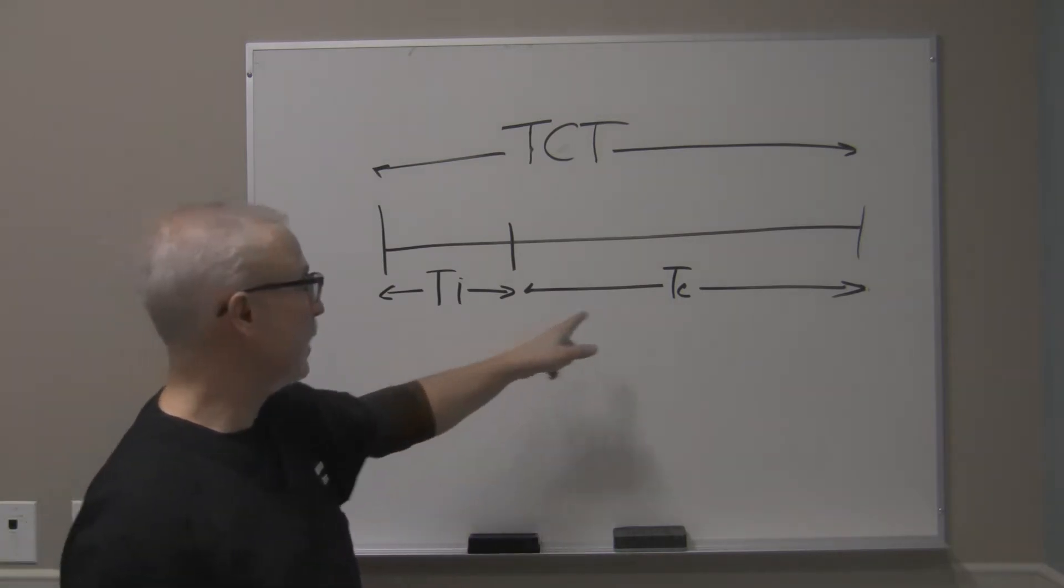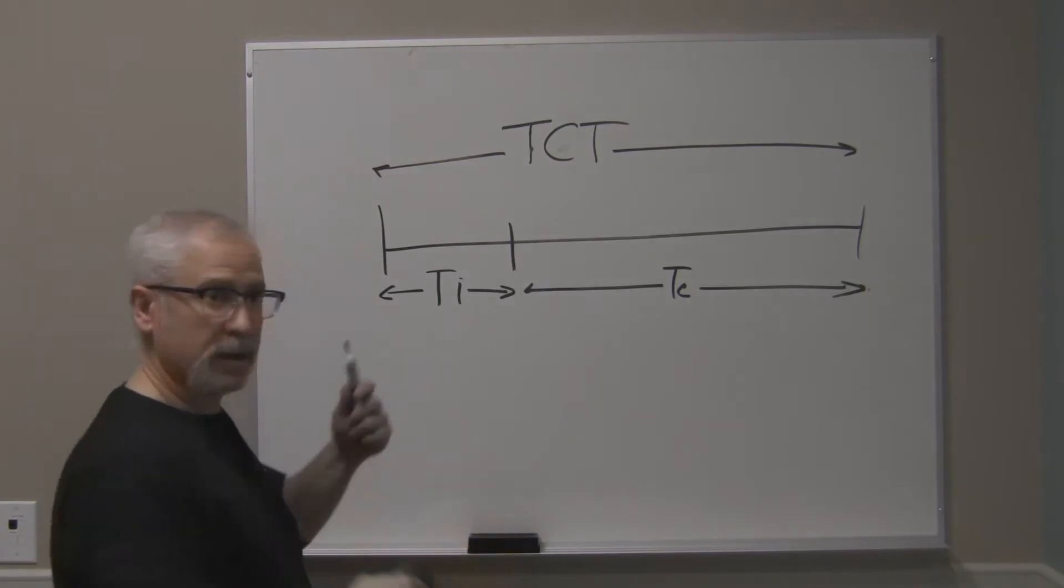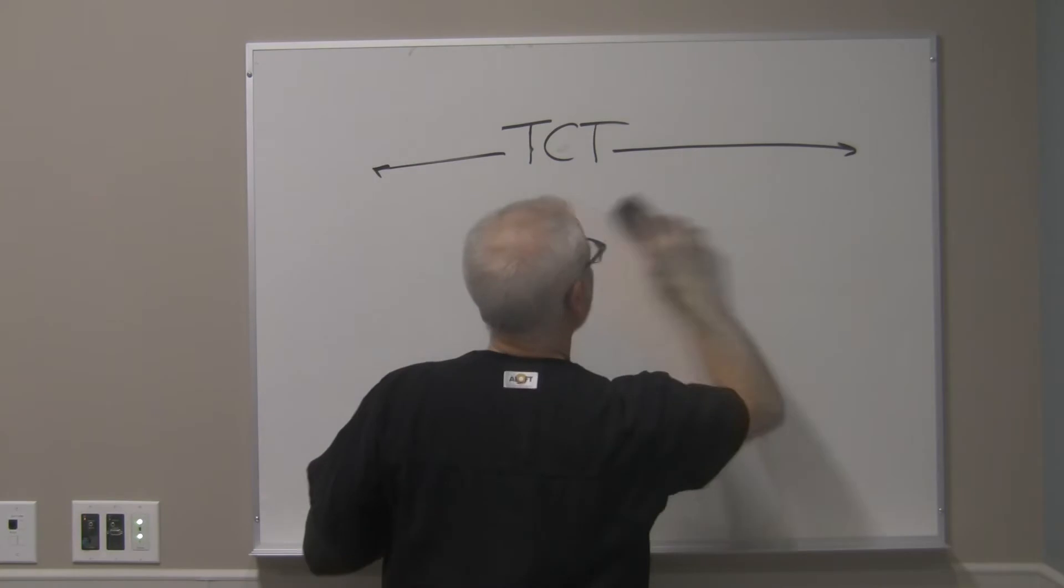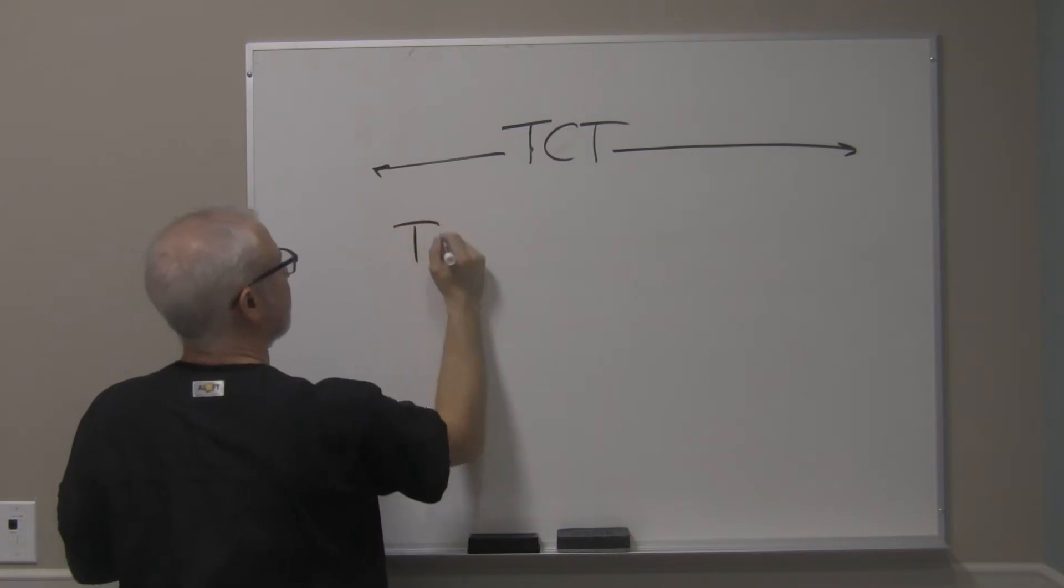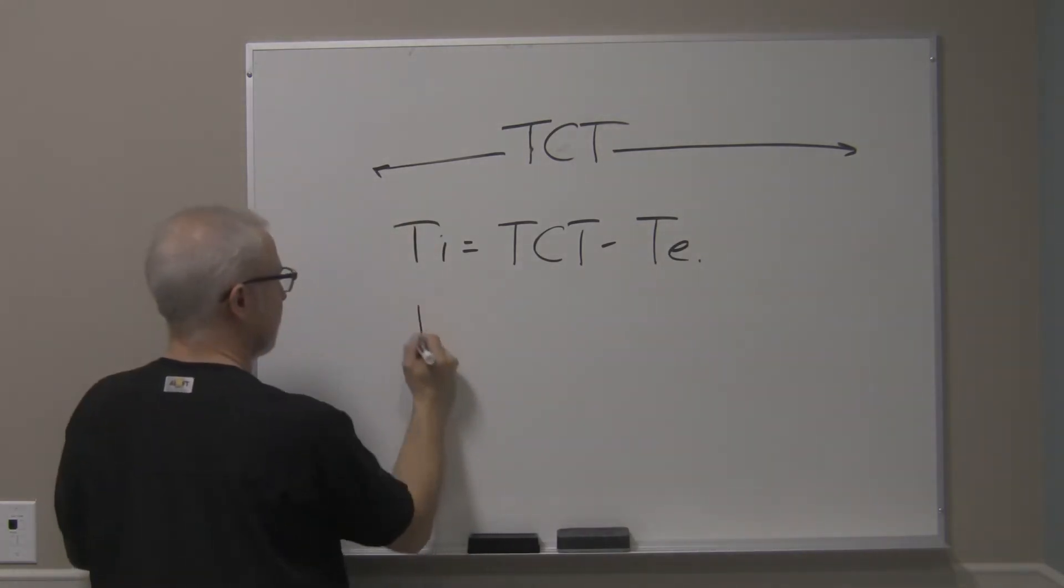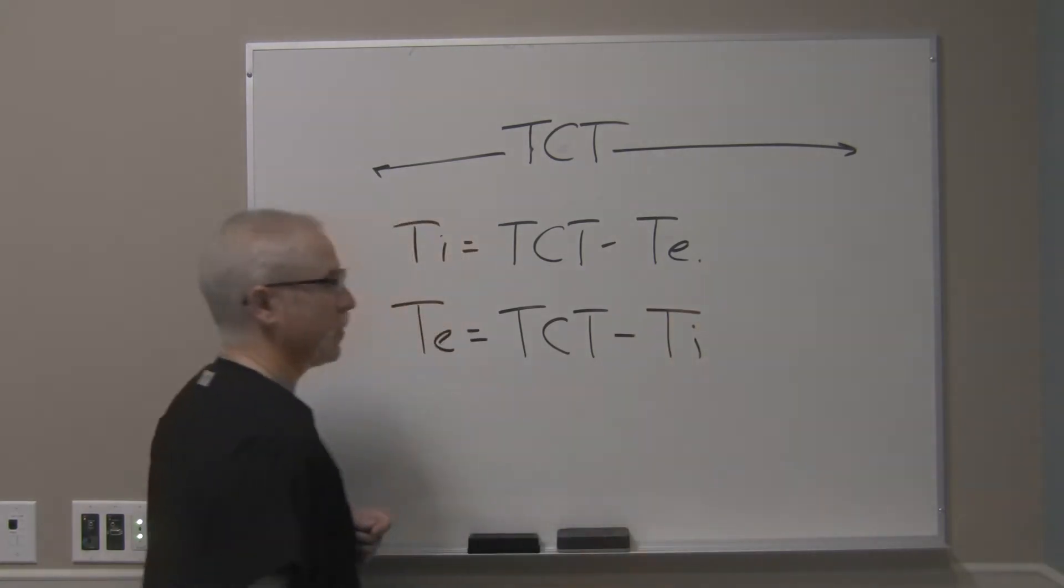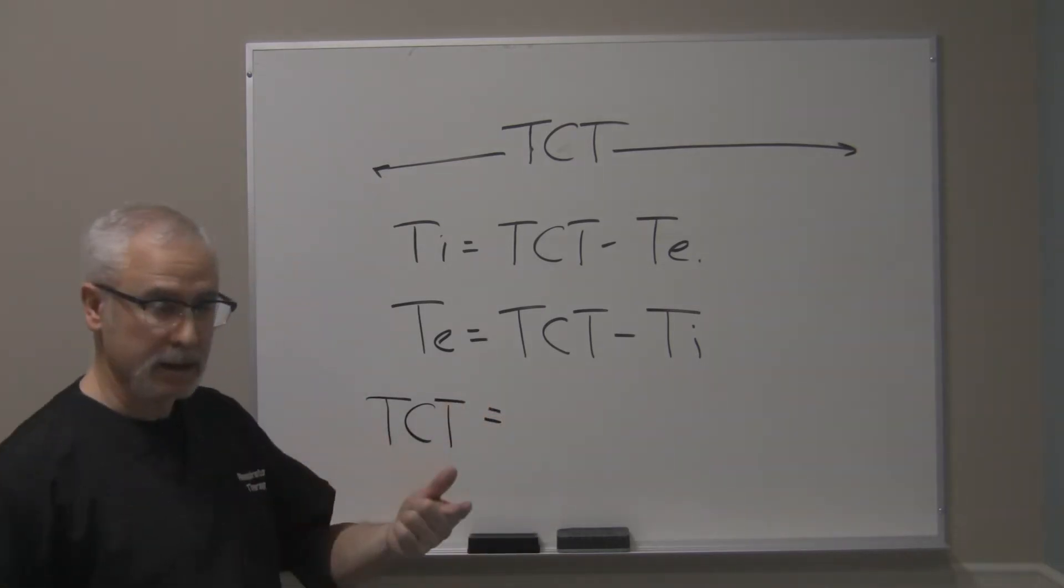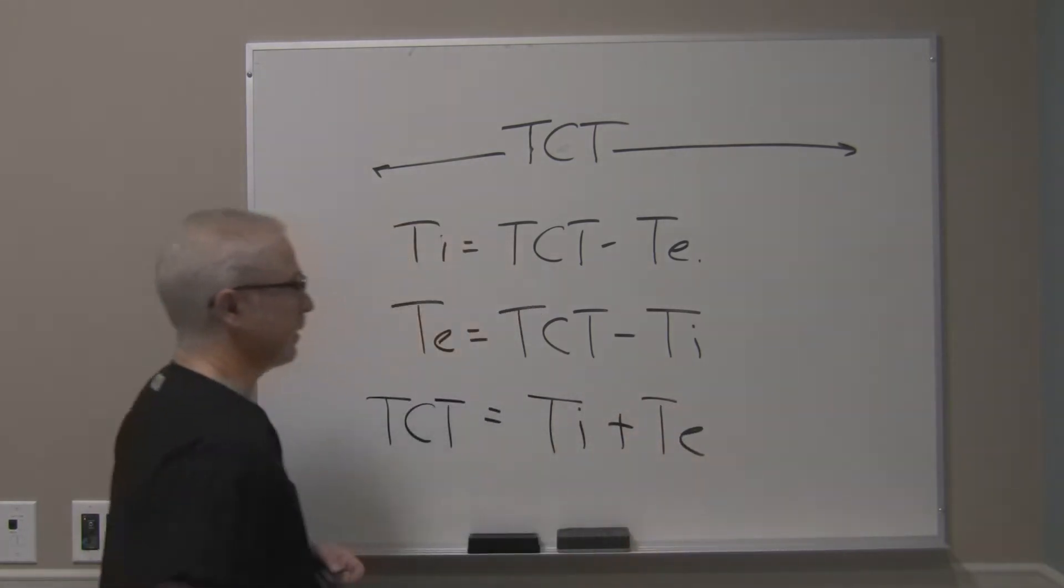So TI, time for inspiration, TE, time for exhalation. Now, here's a way of calculating out TI, TE, and total cycle time. This is the formula for it. Your TI is equal to total cycle time minus TE, and TE is equal to total cycle time minus TI. We can also then say that the total cycle time can be calculated if you know the TI and the TE. So TI plus TE.